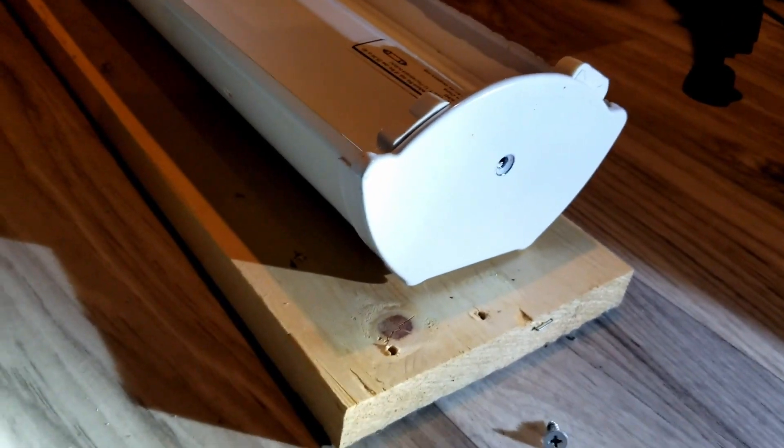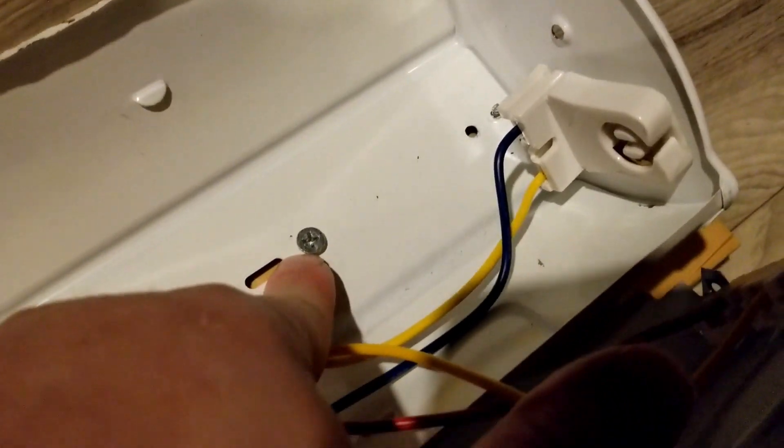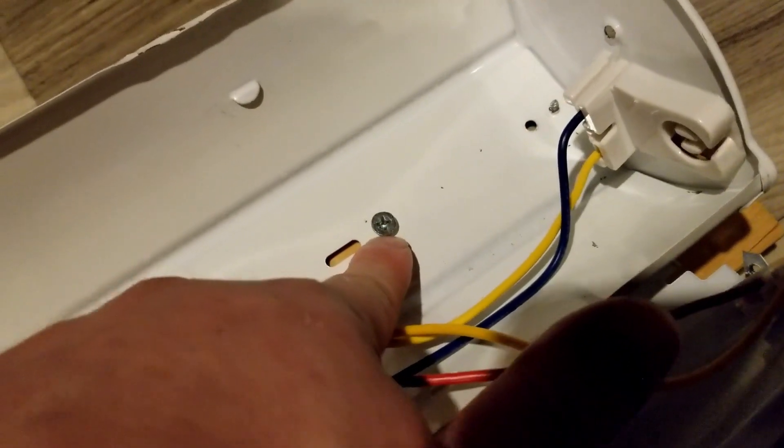There's one on each side. Now it should be free to come out and we can see our ballast in here. Of course they hard-mounted us to that piece of wood, so we're gonna change it so it's not hard-mounted anymore. Don't like not having access to stuff.